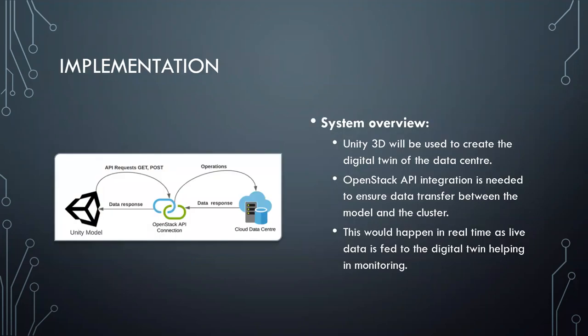The next step is how do we implement this system. We use Unity 3D to create the digital twin of the data center. Unity 3D is an application primarily used to create big open-world 3D games or 2D games. It's primarily used for game development, but we are using it to develop a 3D model since it has high-fidelity assets and is primarily used for 3D development.